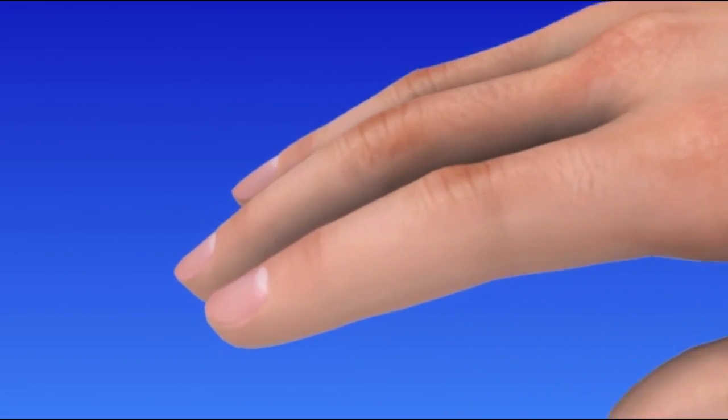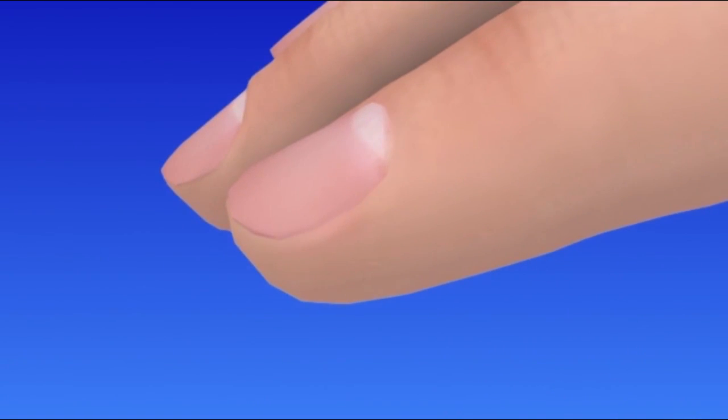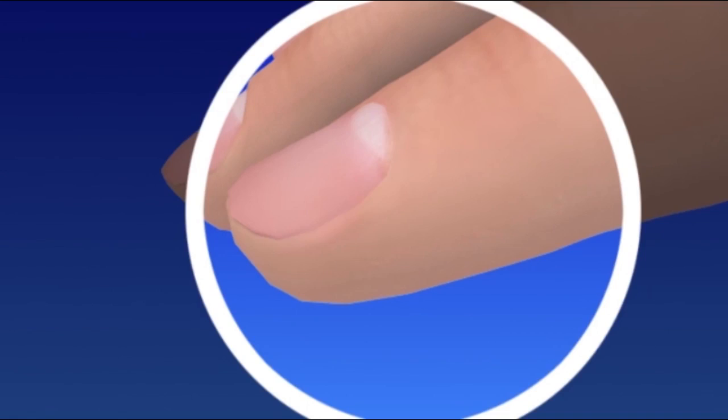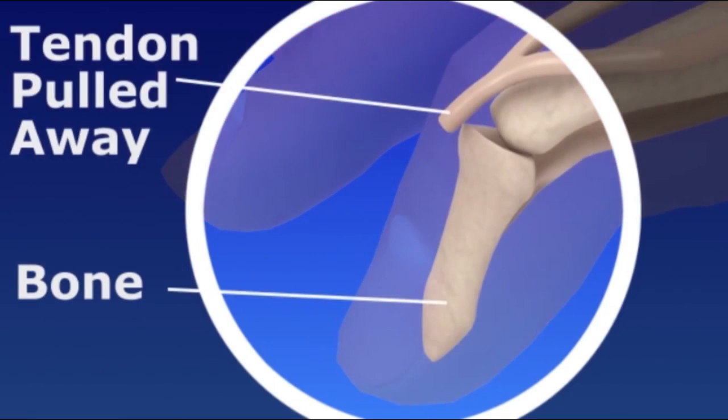A mallet finger injury, also referred to as baseball finger, results when the tip of a finger is forcefully and suddenly bent down into a flexed position. The injury results from force that tears the tendon away from the bone.